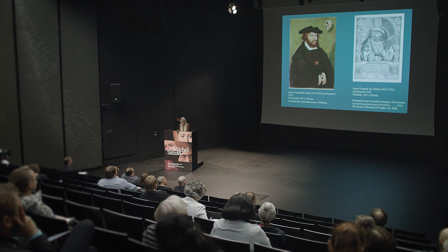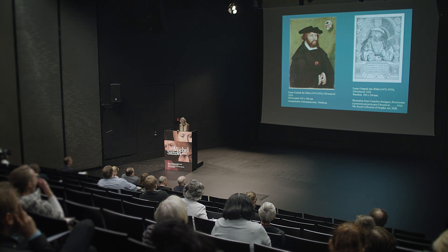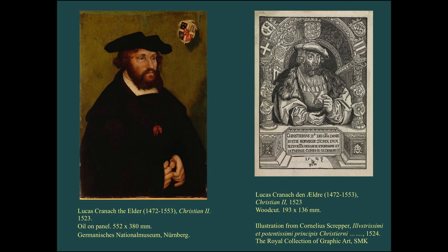I will begin by asking what we actually know about this artwork. As we shall see, we don't know very much, but we do know something. First of all, we know that it is a portrait of King Christian II of Denmark. We can say that for sure because we recognize his features — his iconography — from numerous other portraits of him: portraits, both woodcuts and paintings, carrying the King's identity markers in form of unambiguous inscriptions or weapons. You see some examples here.